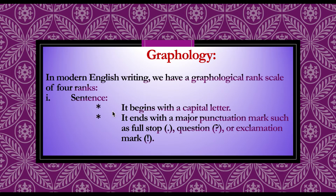From the point of view of graphology — the writing system — a sentence begins with a capital letter and ends with a major punctuation mark such as a full stop, question mark, or exclamation mark. This is the first rank scale of graphology.